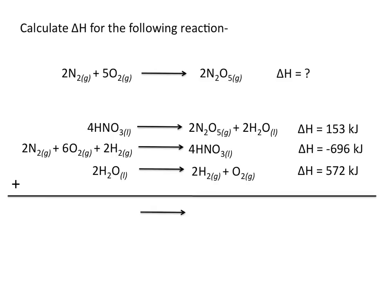We have 4 moles of HNO3 on the reactant and product sides, 2 moles of H2O on the reactant and product sides, and 2 moles of H2 on the reactant and product sides — all of these cancel. The 1 mole of O2 on the product side cancels with 1 mole of O2 on the reactant side, leaving 5 moles of O2 on the reactant side.